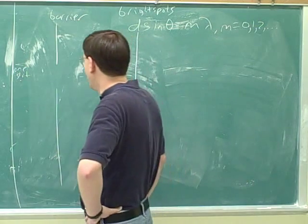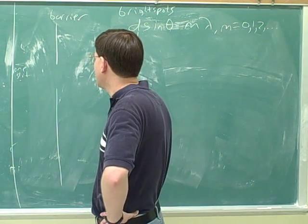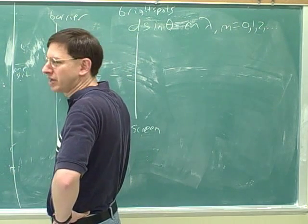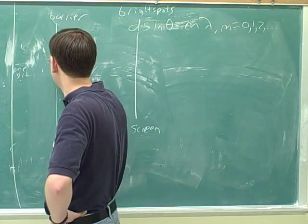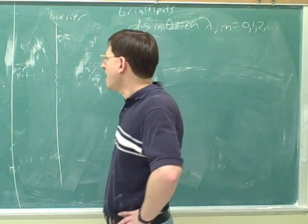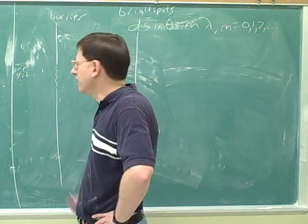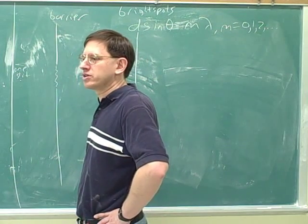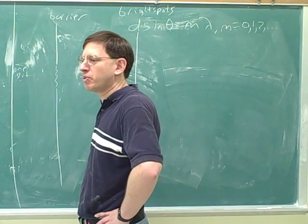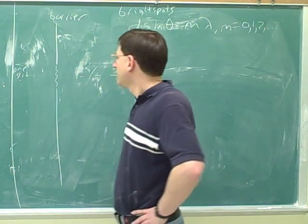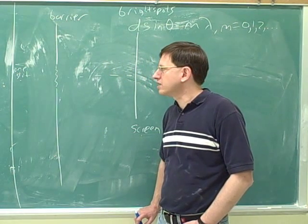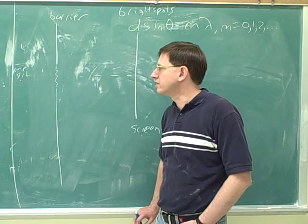Huygens' Principle states that every point on a wavefront acts like a source of its own wave. You can treat every point on the wavefront as a point source for a new wave. So if there's a continuous beam of light coming through the slit, each point on that wavefront generates its own wave.